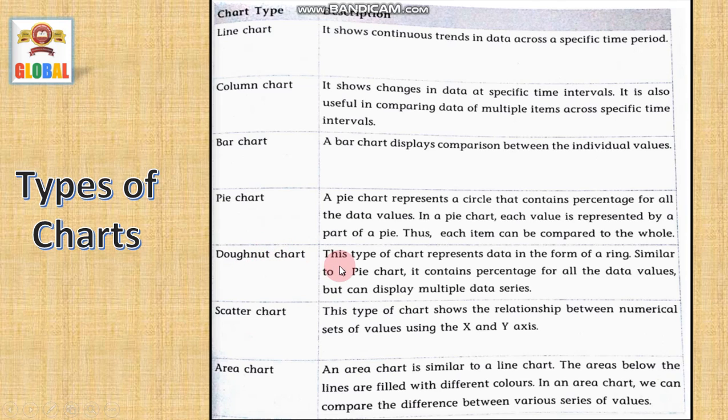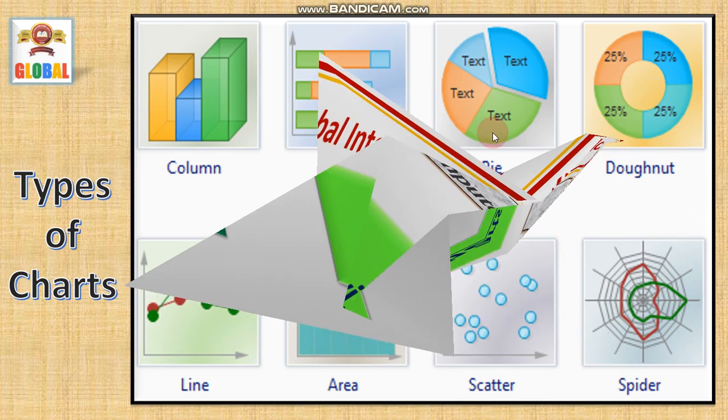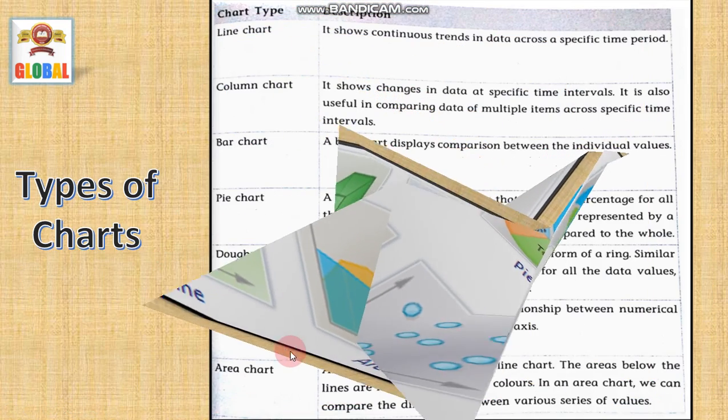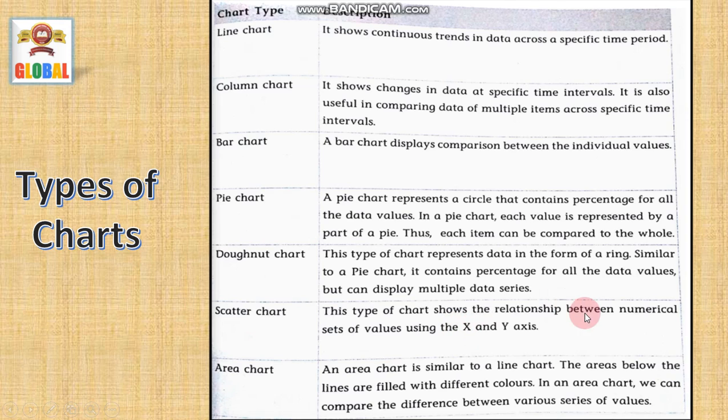The next is a donut chart. This type of chart represents data in the form of ring. Similar to a pie chart, it contains percentage of all the data values but can display multiple data series. Like here, this is a pie chart and this is a donut chart. Next is a scatter chart. This type of chart shows the relationship between numerical set of values using X and Y axis. And next is area chart. An area chart is similar to the line chart. The area below the lines are filled with different colors. In an area chart, we can compare the difference between the various series of values. These are the types of charts.